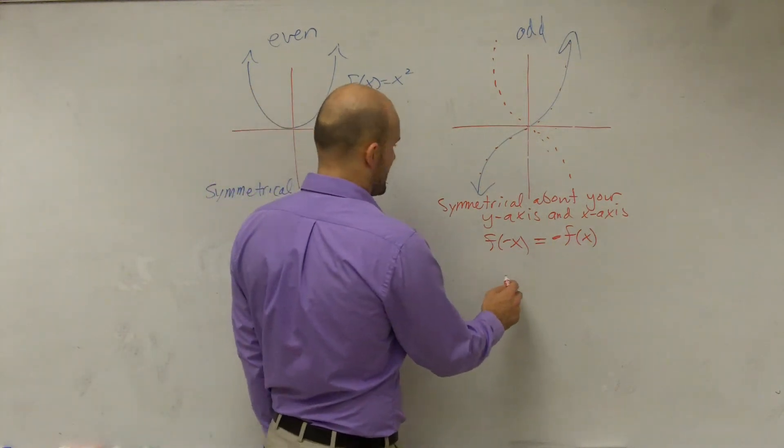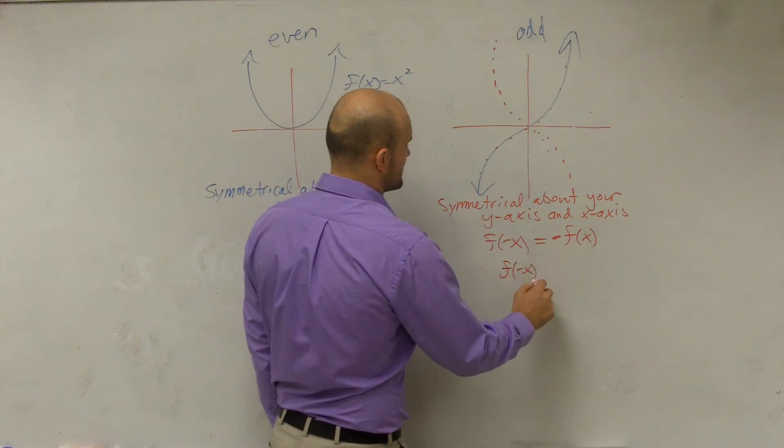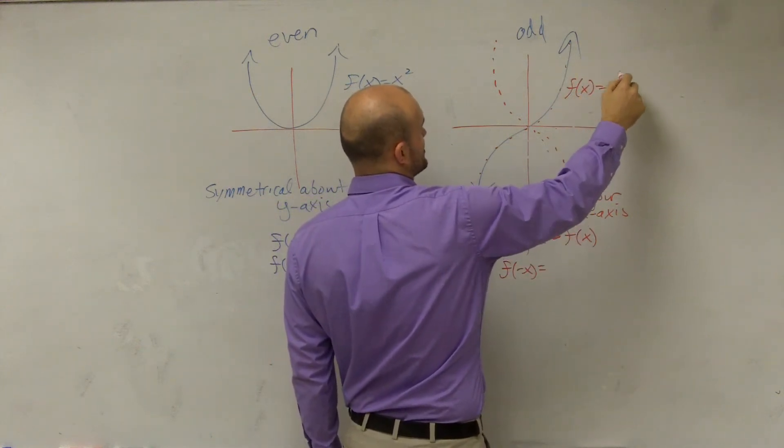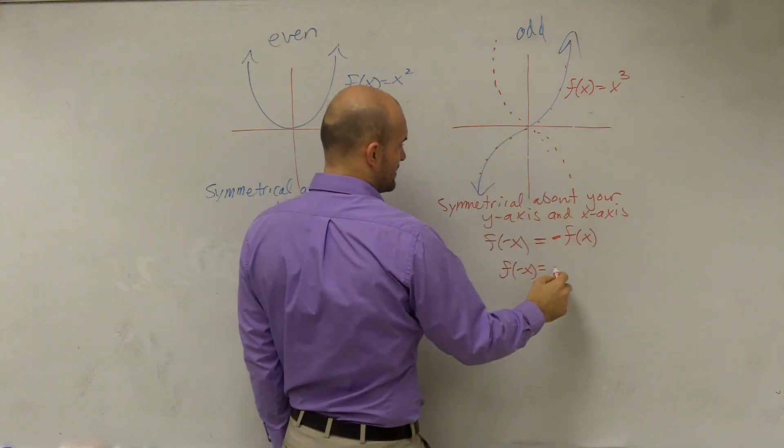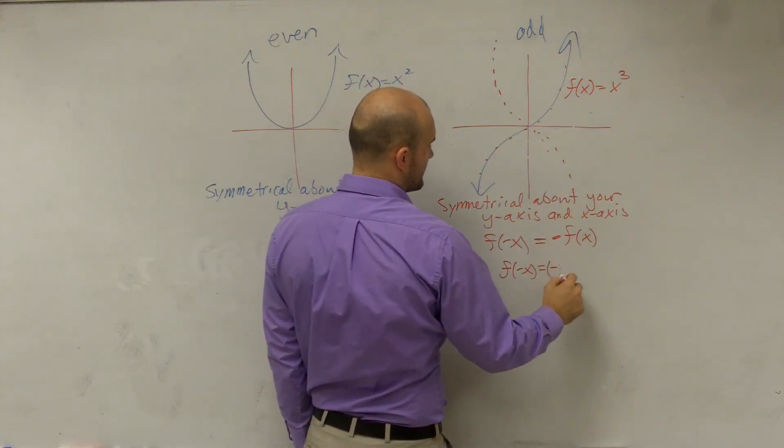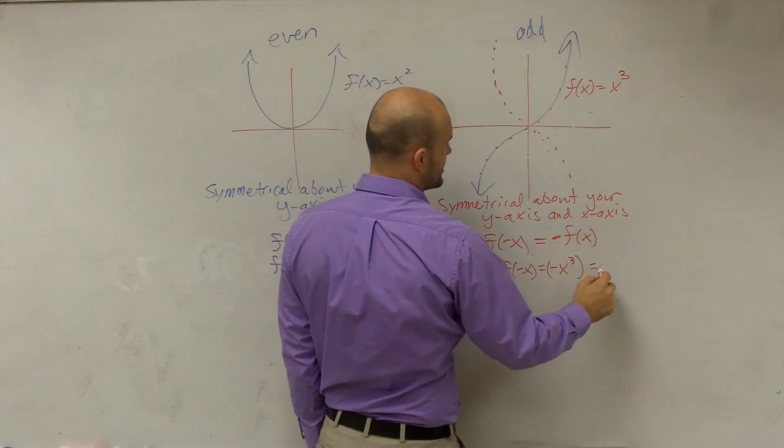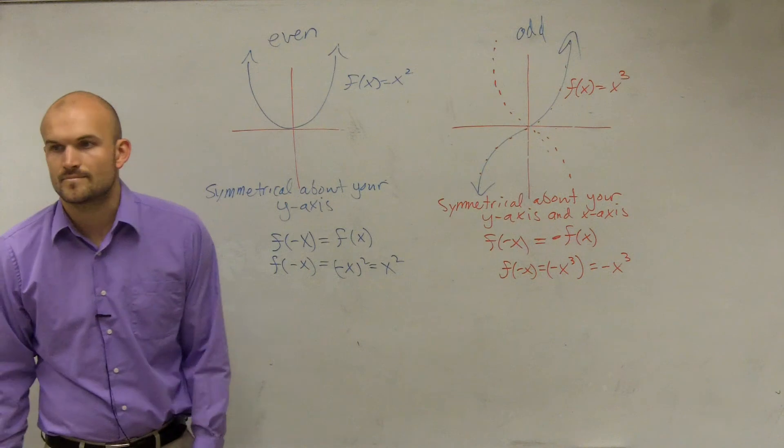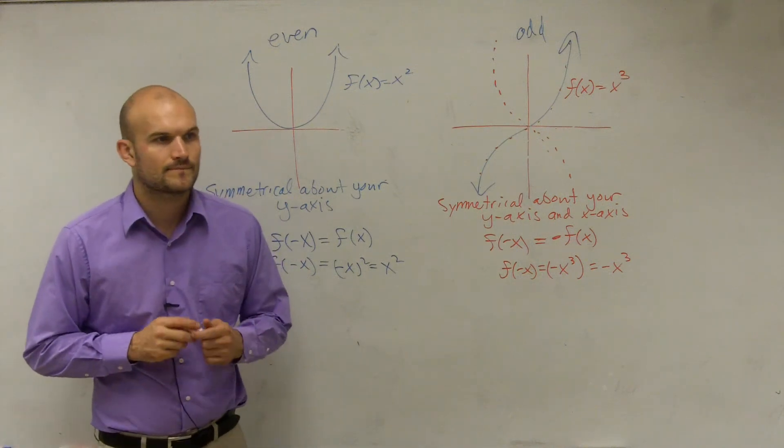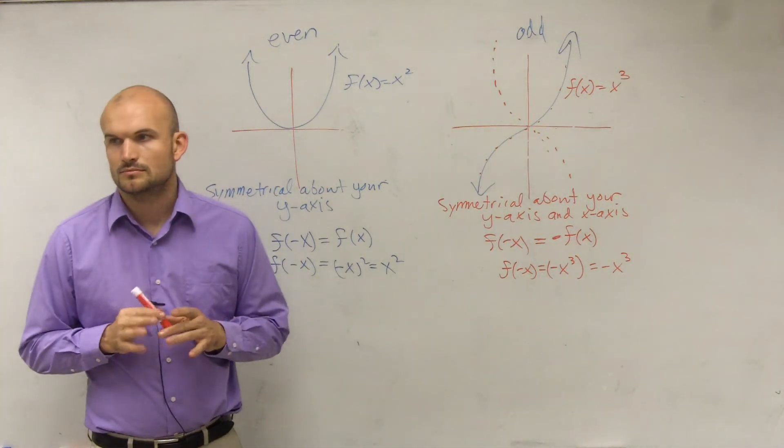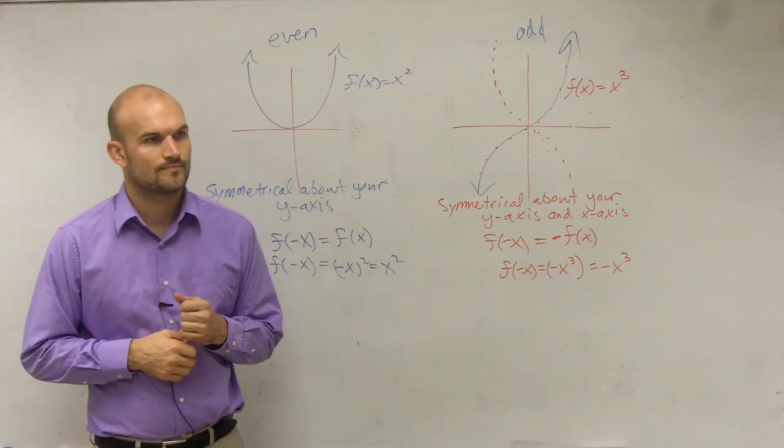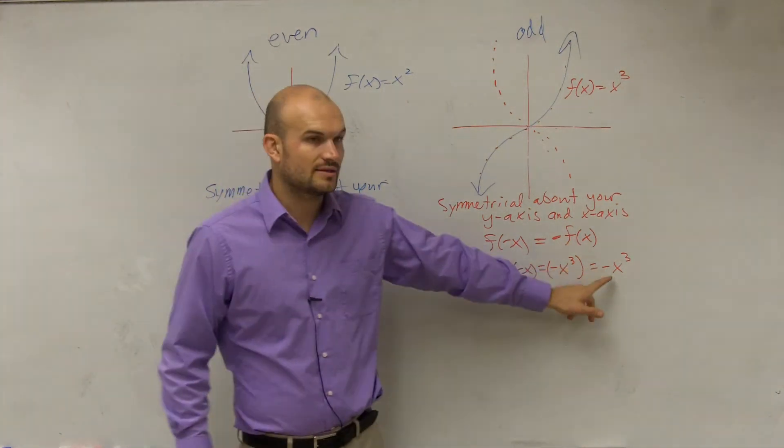So let's take a look at my one function. Let's do f of negative x. This function is f of x equals x cubed. So if I did f of x, it would be negative x cubed, which equals negative x cubed, which looks like that. It equals the negative, the opposite of itself.